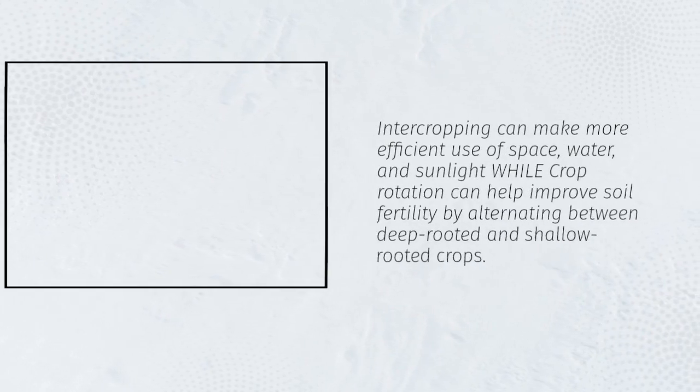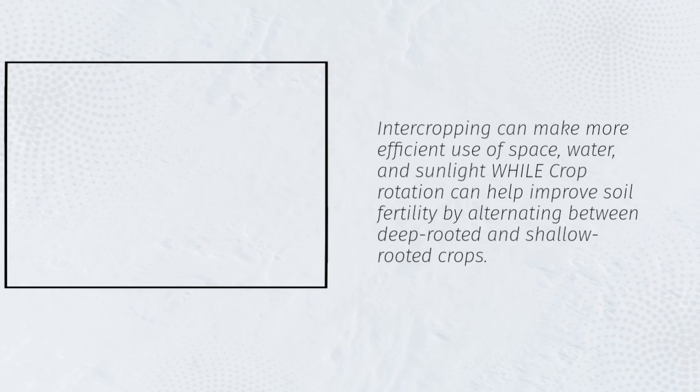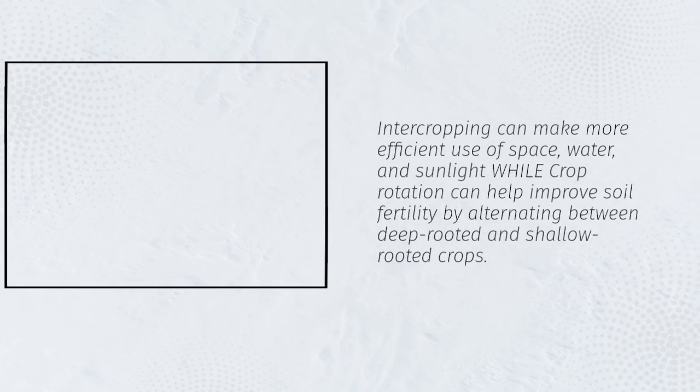Intercropping can make more efficient use of space, water, and sunlight, while crop rotation can help improve soil fertility by alternating between deep-rooted and shallow-rooted crops.